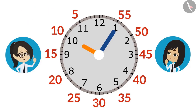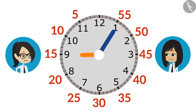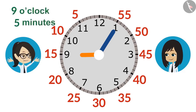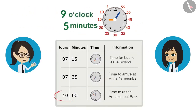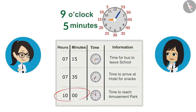Oh yes, it's 9 o'clock before 10 o'clock. This means we have to leave the hotel at 5 minutes past 9 o'clock so that we reach the amusement park at 10 o'clock. Yes, now it seems correct.